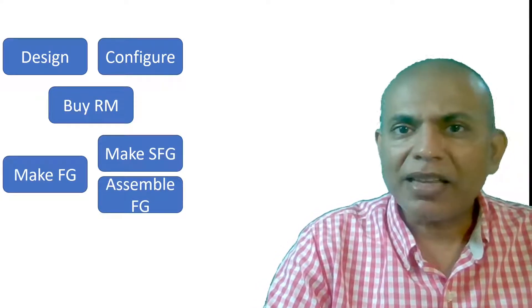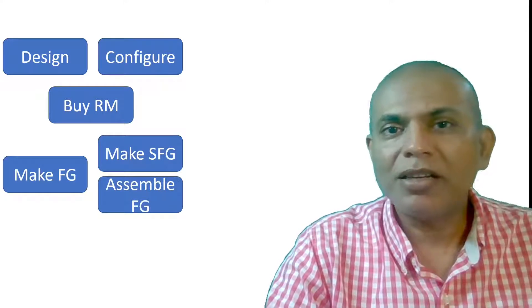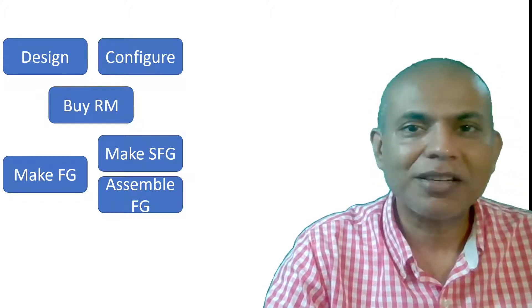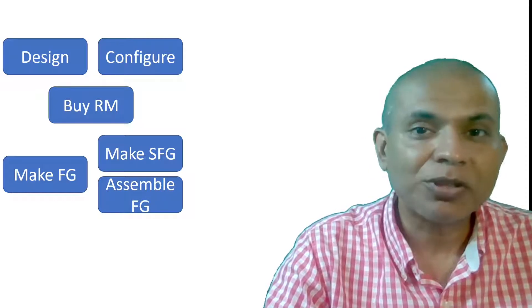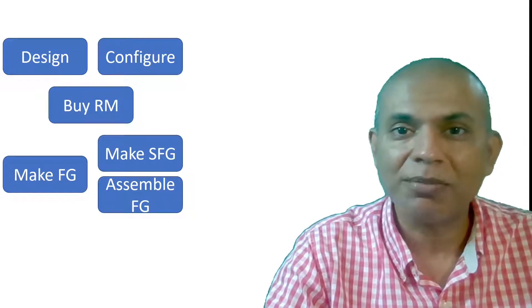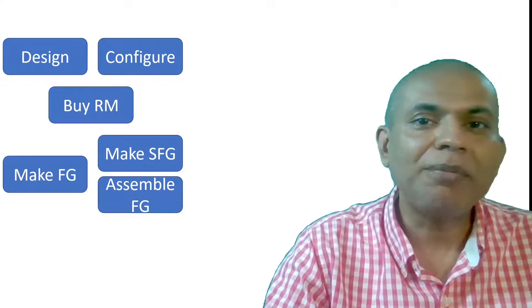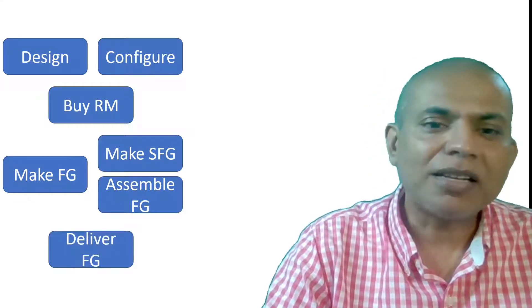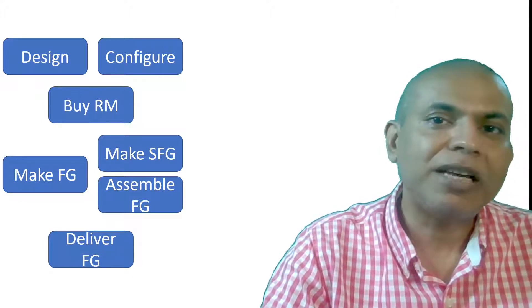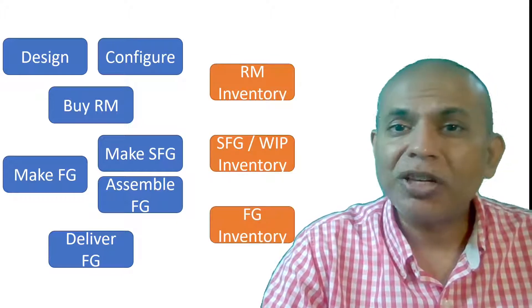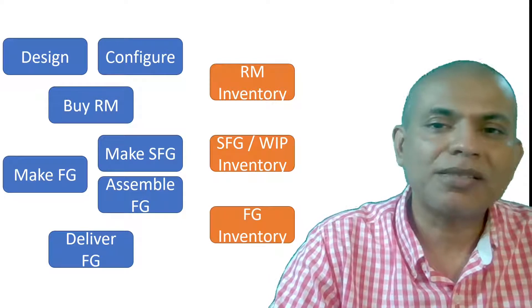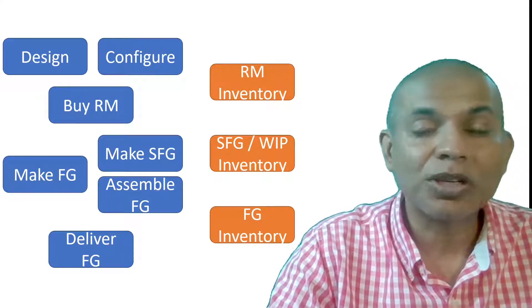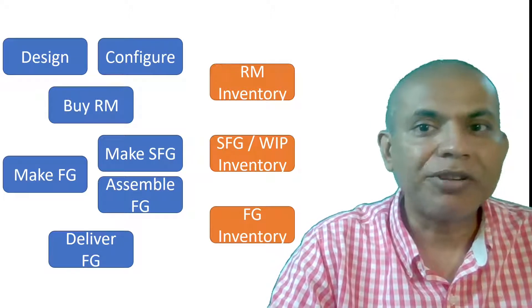Next, we make the product — but there are different possibilities here. One is we use the raw materials and make a finished product directly. A second option is we break up the manufacturing into two parts: in the first part, we make semi-finished goods, also called modules or sub-assemblies, and in the next part we mix and match those modules to make the finished product the consumer requires. Then we deliver it. Inventory in the system can be raw material inventory, semi-finished goods or WIP (work-in-process) inventory, or finished goods inventory.